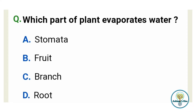Question number three. Which part of the plant evaporates water? Option A: Stomata. Option B: Fruit. Option C: Branch. And option D: Root. And the correct answer is option A, Stomata.